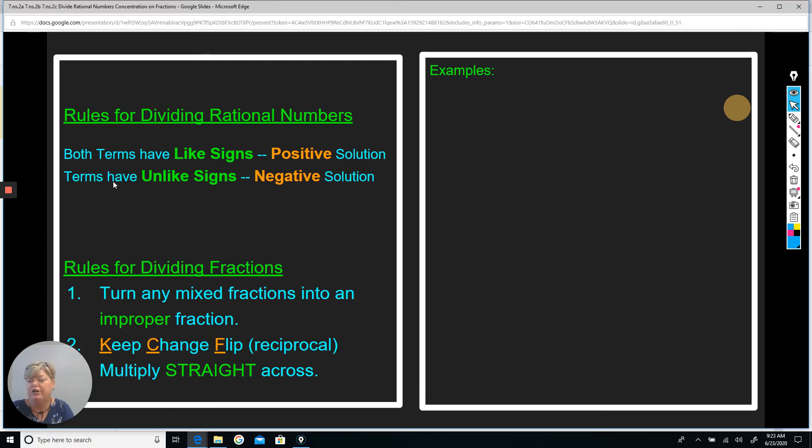If you have two terms where they have unlike signs, the solution will be negative. An example would be if you had a negative and a positive term, then your solution will be negative.